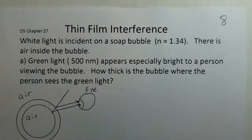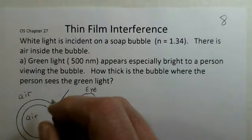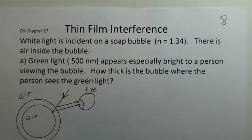Thin film interference here for a soap bubble. Let's suppose that the thin film of the soap bubble is a little higher index of refraction than water, let's say 1.34. It's soapy water, not pure water, and there's air inside the bubble. We have green light that is really sticking out especially bright to a person who's viewing the bubble. So we have white light coming in but the green is really bright as this person looks at it with their eye.